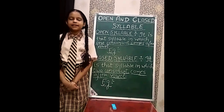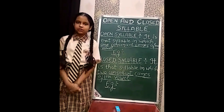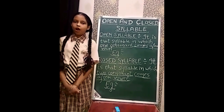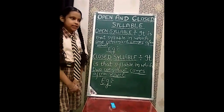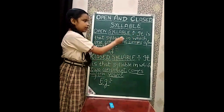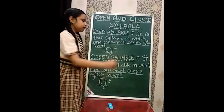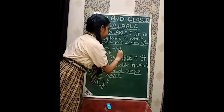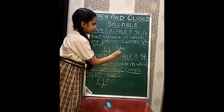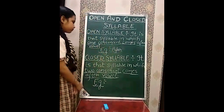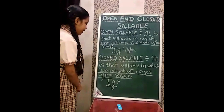Hi everyone, my name is Anjali Mahajan. I am in 5th class in Violet Modern School. Today we are talking about open syllable and closed syllable. First of all, what is an open syllable? It is a syllable in which one consonant comes after a vowel. For example, the word 'paper' — A is a vowel and P is a consonant, and one consonant comes after a vowel. That is called an open syllable.